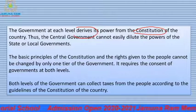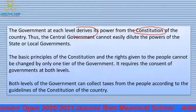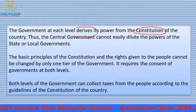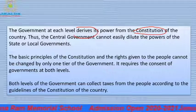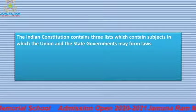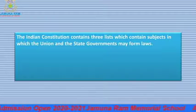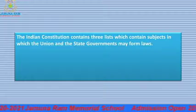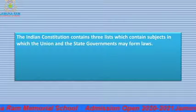Why can we say India is a federal country? Because it is already mentioned in our constitution — these three tiers of government. The Indian constitution contains three lists which contain subjects in which the union and the state government form laws, and all these things are mentioned in our constitution.